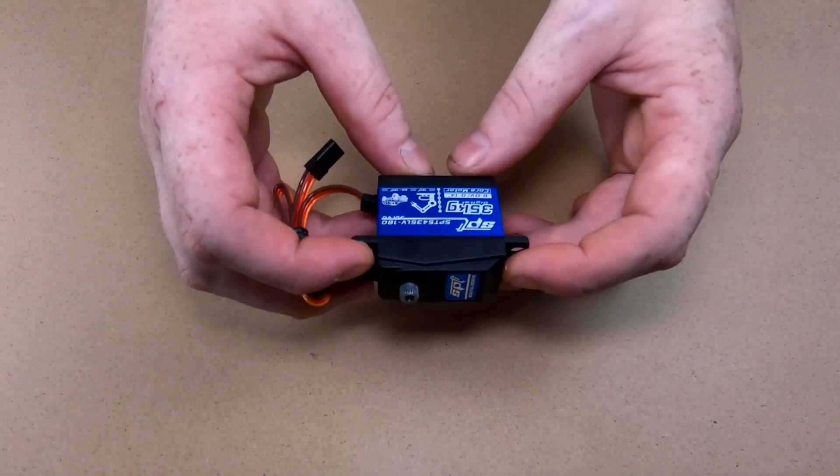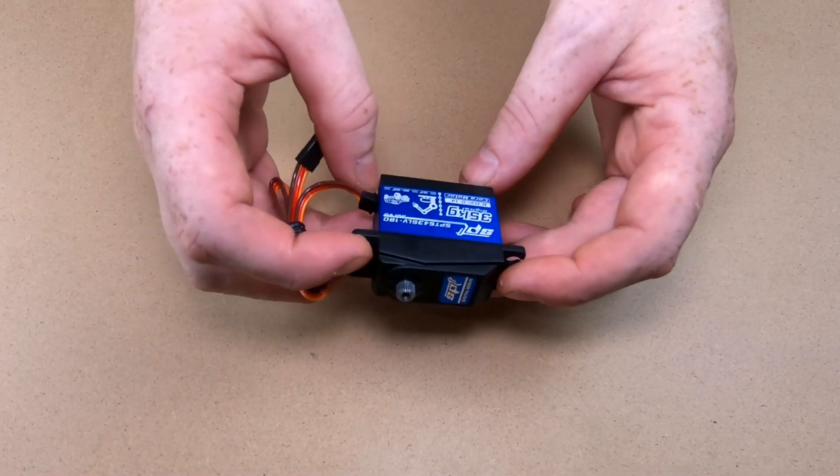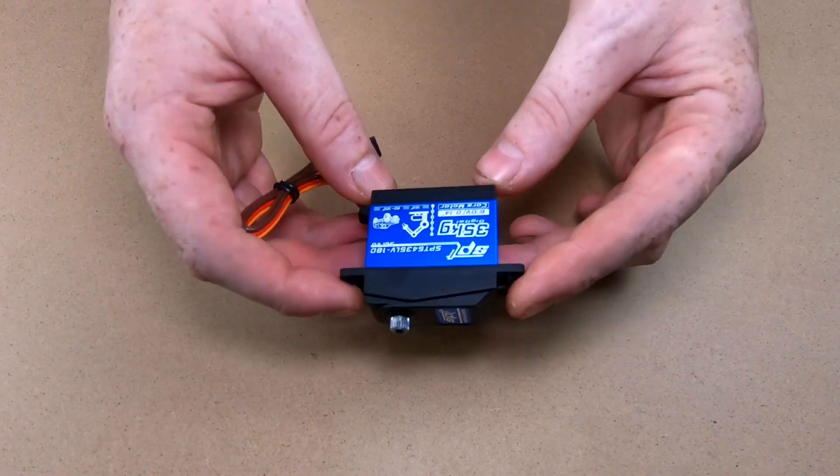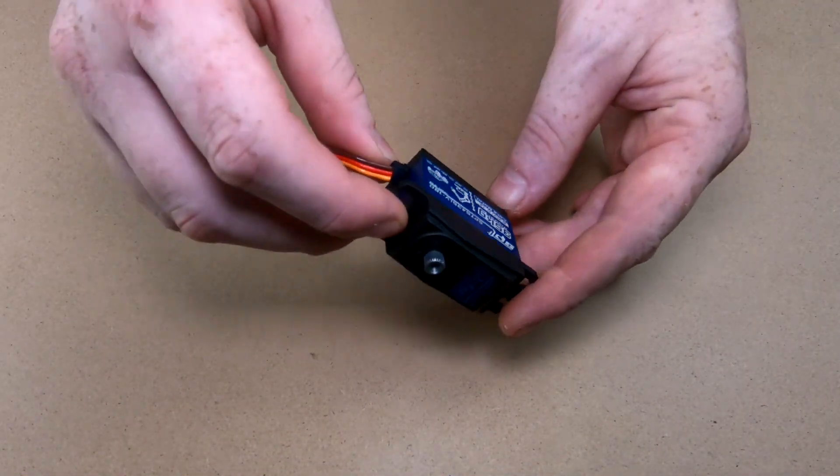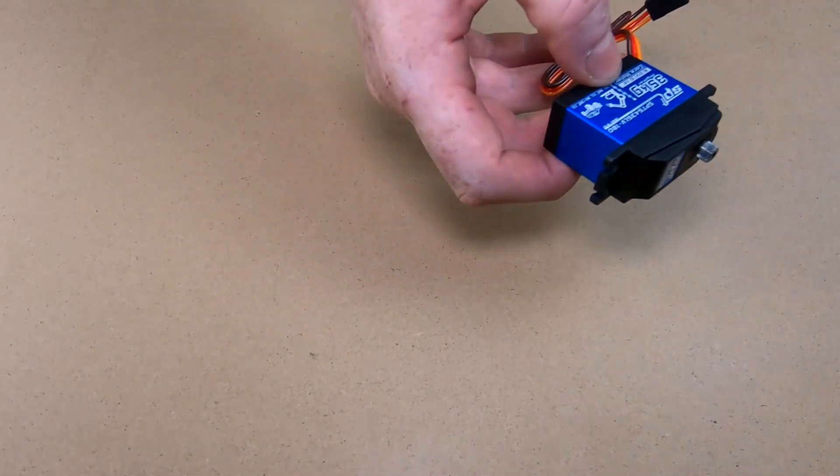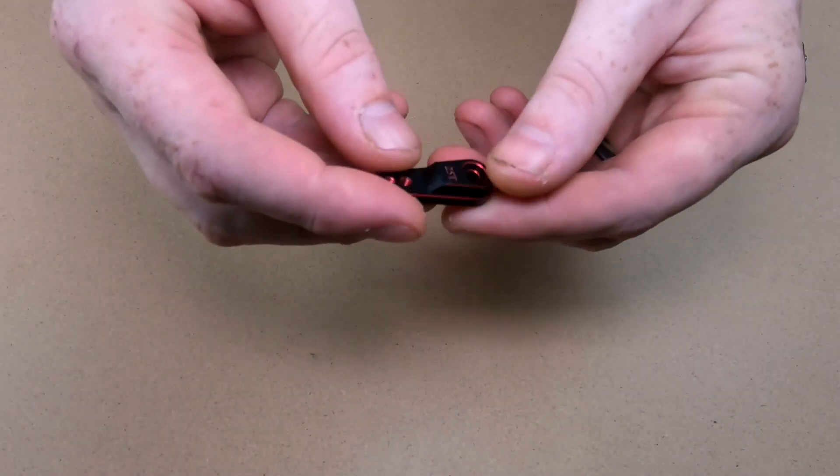I hope we can run this without the UBEC but we will try it as is and then we'll try putting a cap pack if we have any issues with it. Then if we need to we'll run a UBEC system on it. We also picked up an alloy servo horn for it as well.